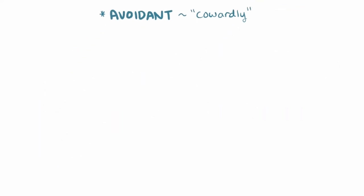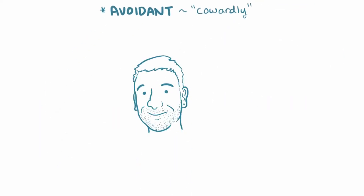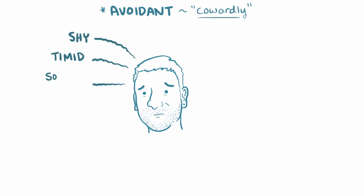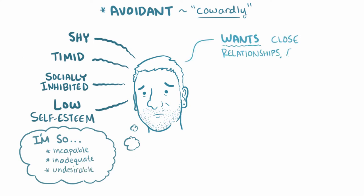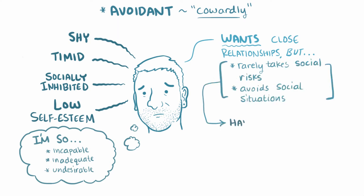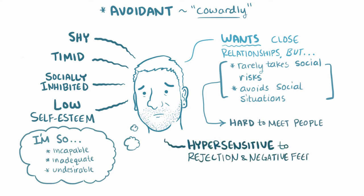Let's start with avoidant personality disorder, associated with the word cowardly. These individuals are shy, timid, and socially inhibited, with extremely low self-esteem, and see themselves as incapable, inadequate, and undesirable. These people want close relationships with others, but rarely take social risks and avoid social situations, which makes it hard for them to meet new people. People with this disorder are also hypersensitive to rejection and negative feedback, becoming even more withdrawn when that happens.